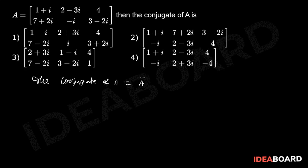Replace every element by the conjugate of that element. So 1 plus i becomes 1 minus i, 2 minus 3i conjugate is 2 plus 3i, and 4 remains as it is.